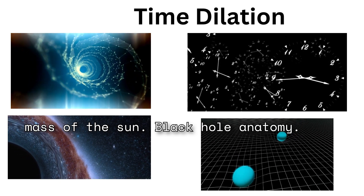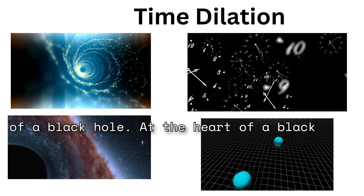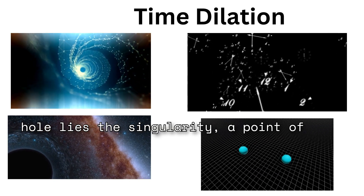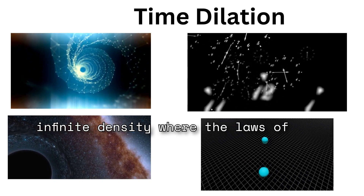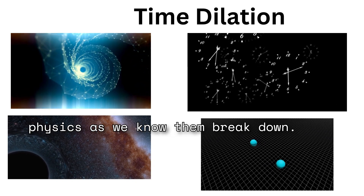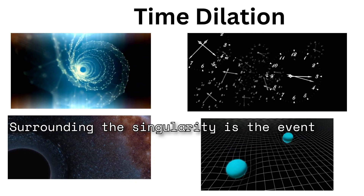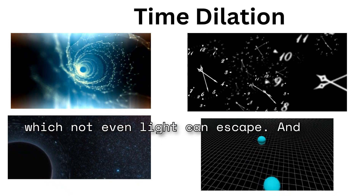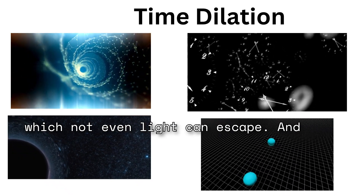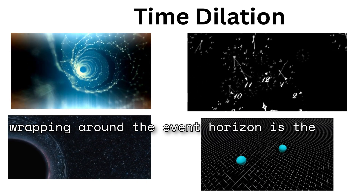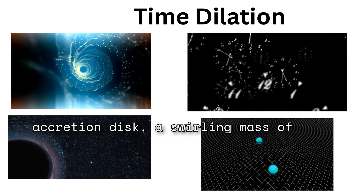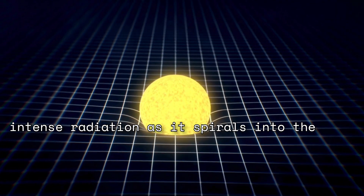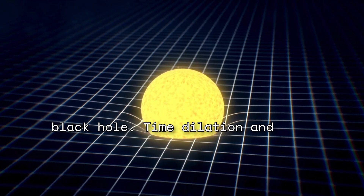Let's take a closer look at the anatomy of a black hole. At the heart of a black hole lies the singularity, a point of infinite density where the laws of physics as we know them break down. Surrounding the singularity is the event horizon, the point of no return beyond which not even light can escape. And wrapping around the event horizon is the accretion disk, a swirling mass of superheated gas and dust that emits intense radiation as it spirals into the black hole.